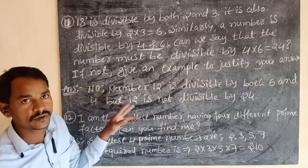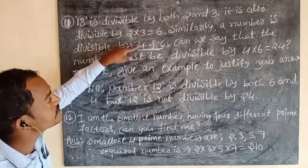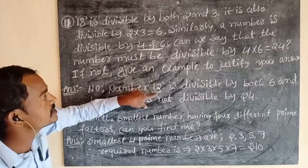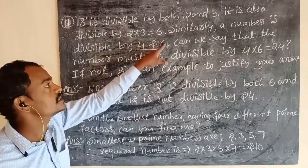Just imagine a number is 12. 12 is completely divisible by 4 and 6. 4 divides 12, 6 divides 12.